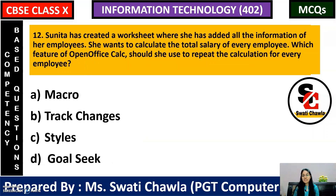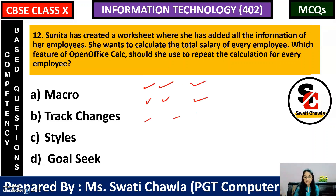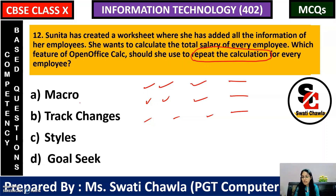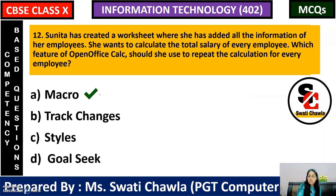Next: Sunita has created a worksheet where she has added all the information of her employees. She wants to calculate the total salary of every employee. Which feature of OpenOffice Calc should she use to repeat the calculation for every employee? The correct answer is option A — that is macro. With macros, you record and save the steps you want to repeat, and every time you need those steps, you just run the macro.